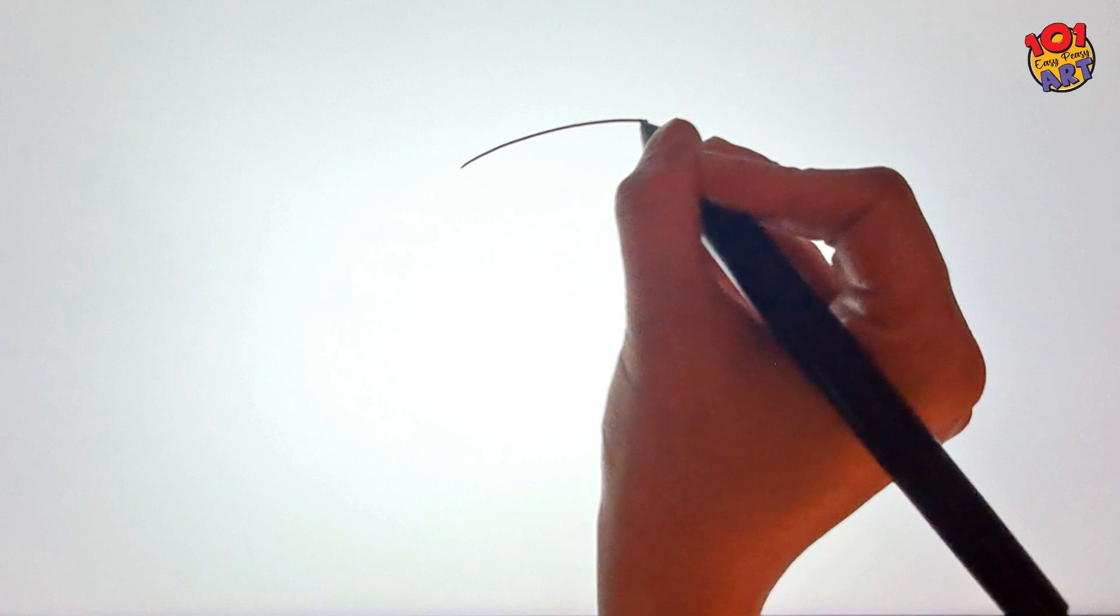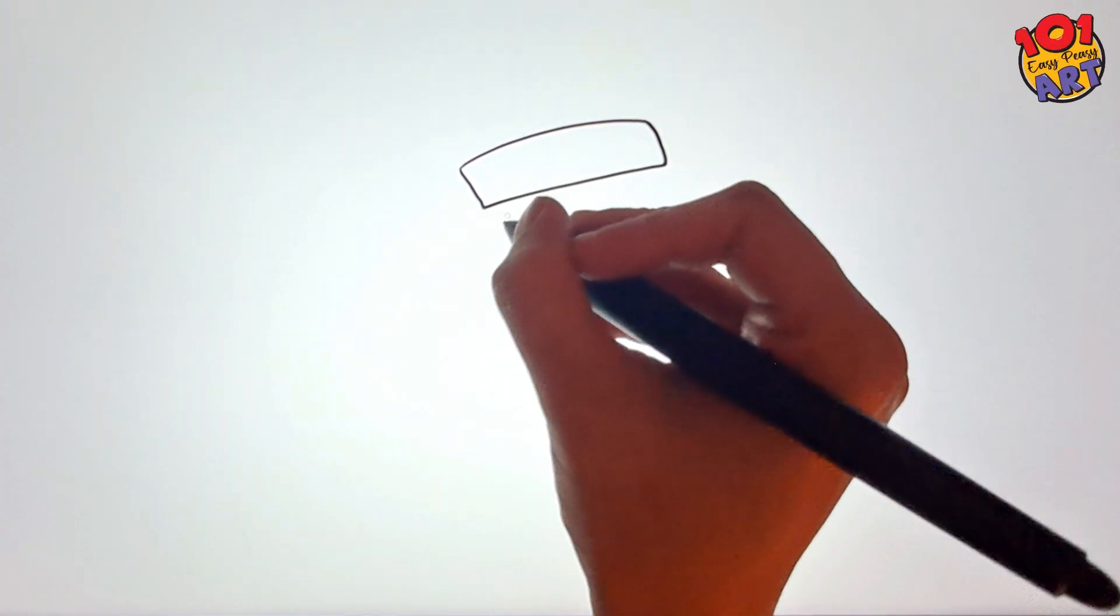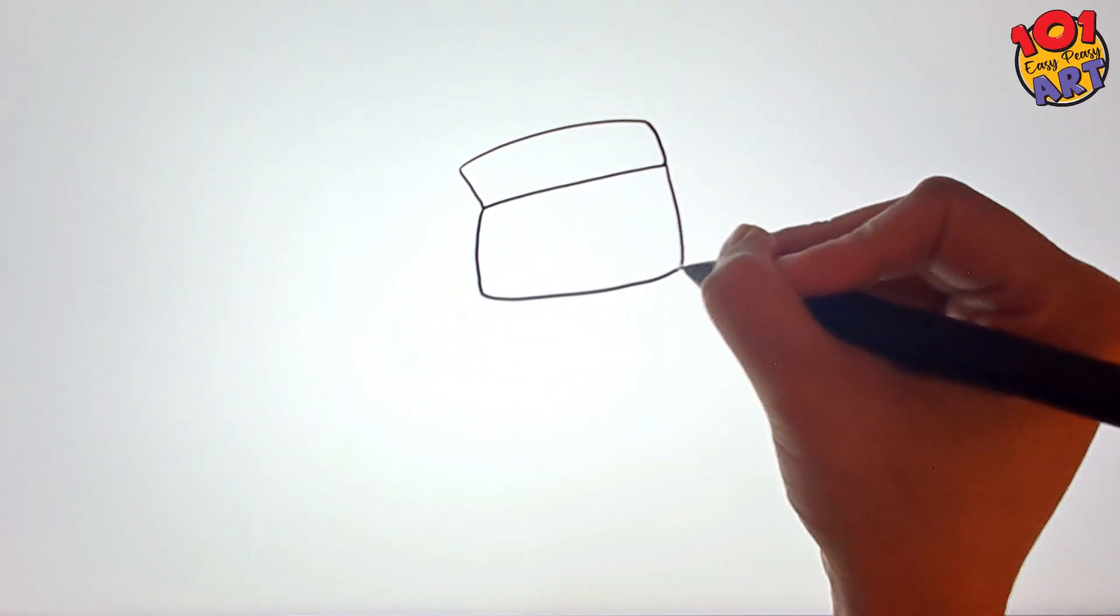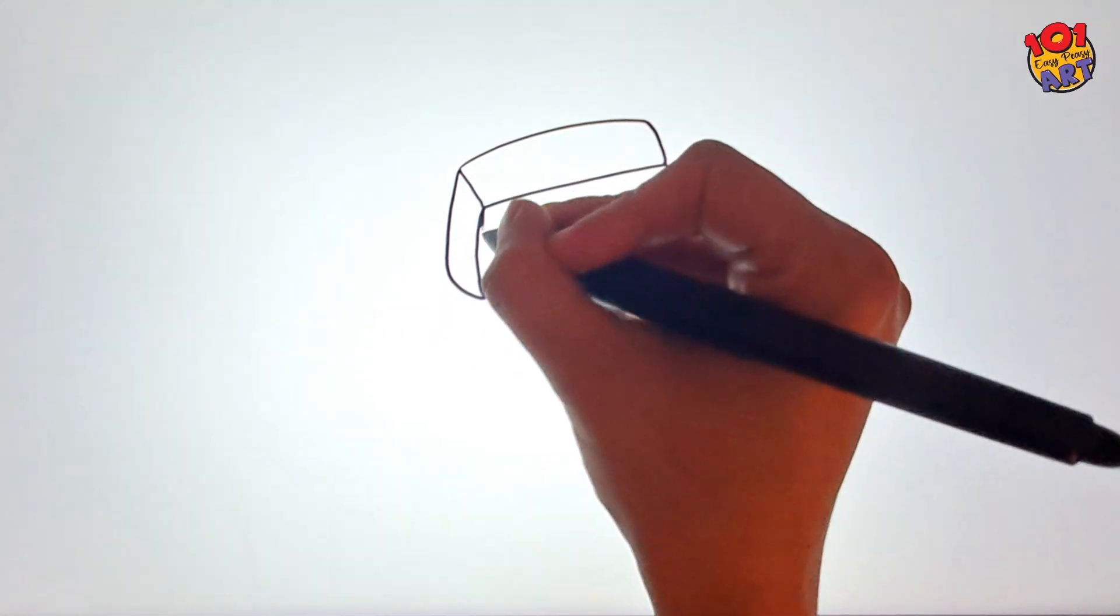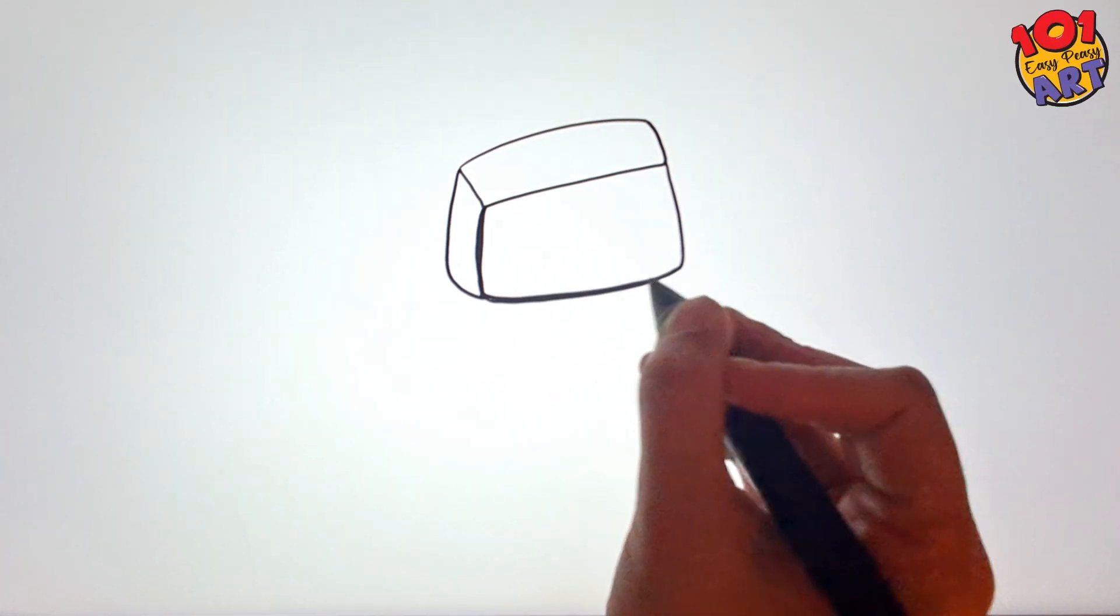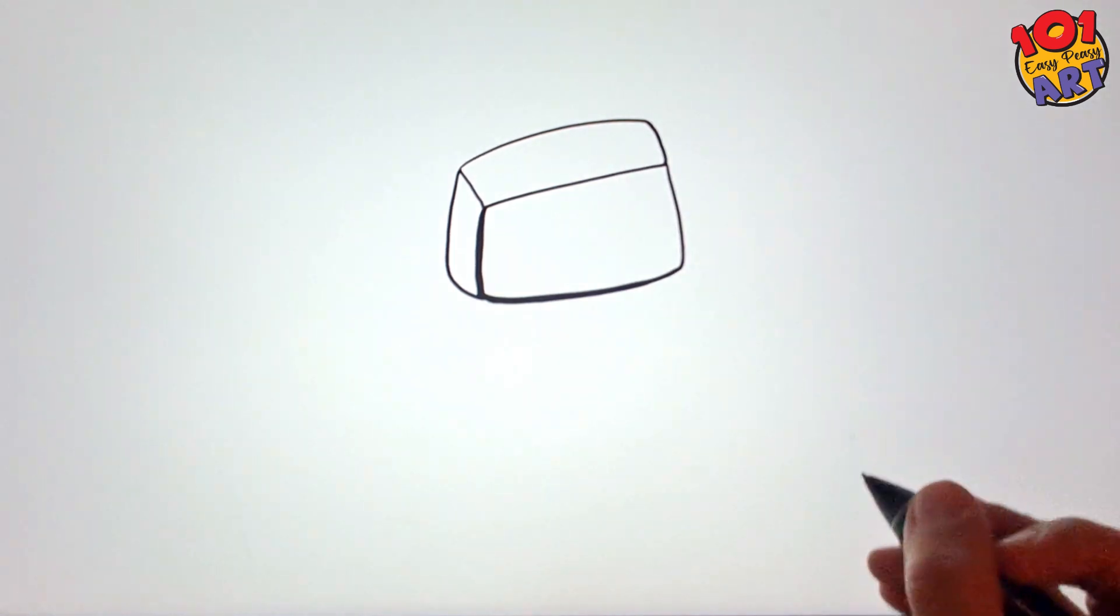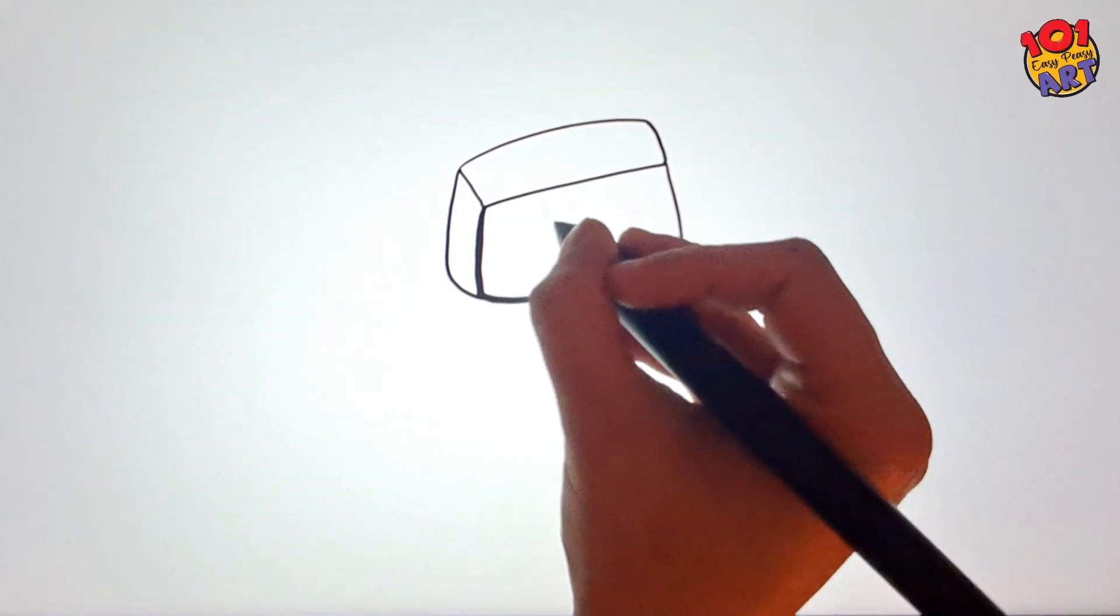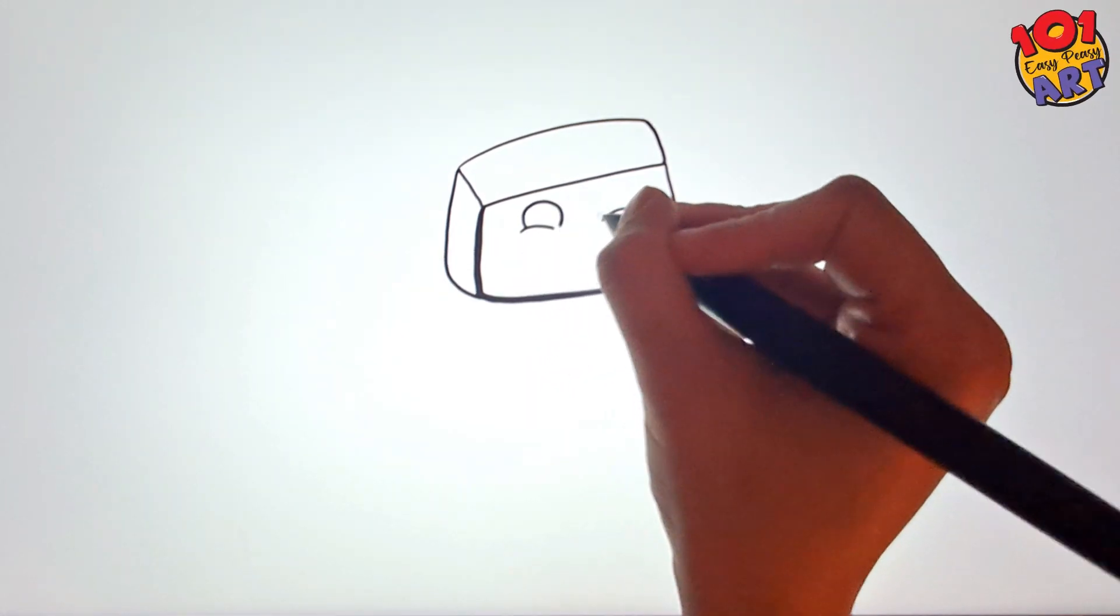First up, let's draw our Butter Buddy with curvy edges for that adorable look. Big, round eyes with a cheeky, half-open expression.